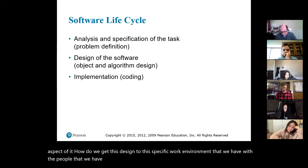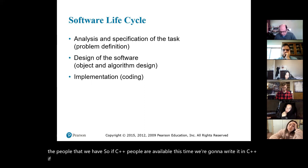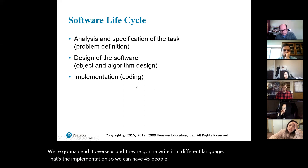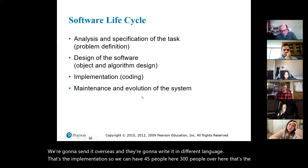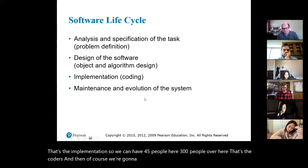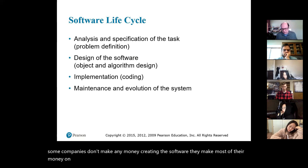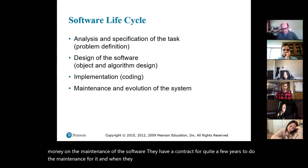Then we go to the technical aspect: how do we get this design into the specific work environment with the people we have? If C++ people are available, we write it in C++. If Java people are available, we do it in Java. Or we can send it overseas to be written in a different language. That's the implementation — we might have four or five people in design but 300 coders. Some companies don't make much money creating the software; they make most of their money on maintenance contracts. When they find additional features, they can sell those to the customer to add to the software.